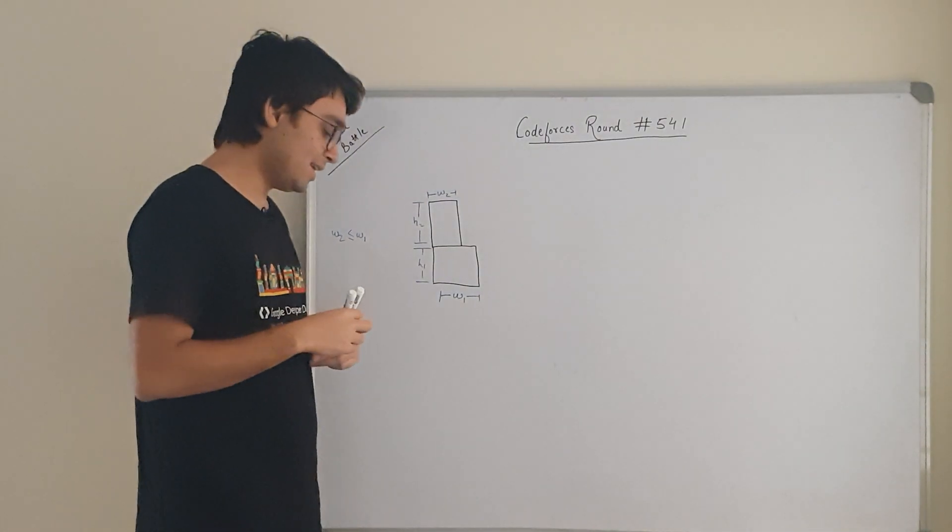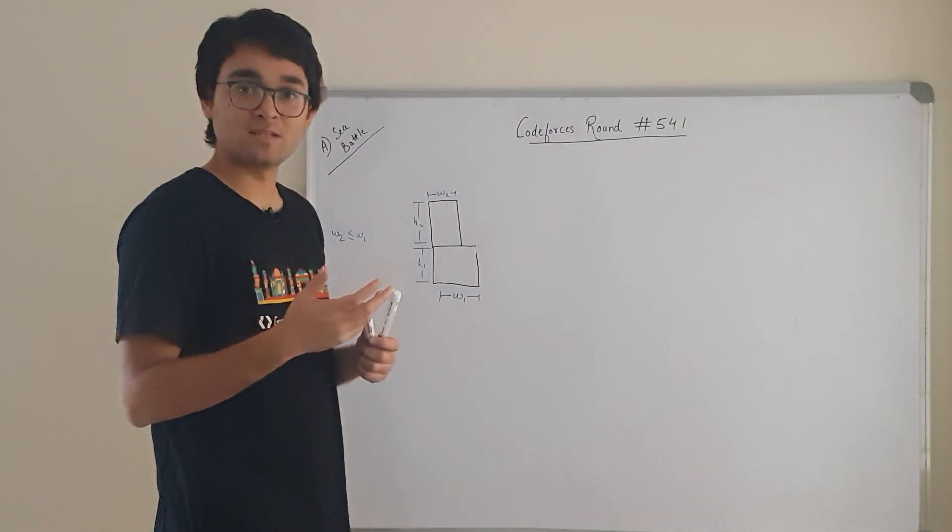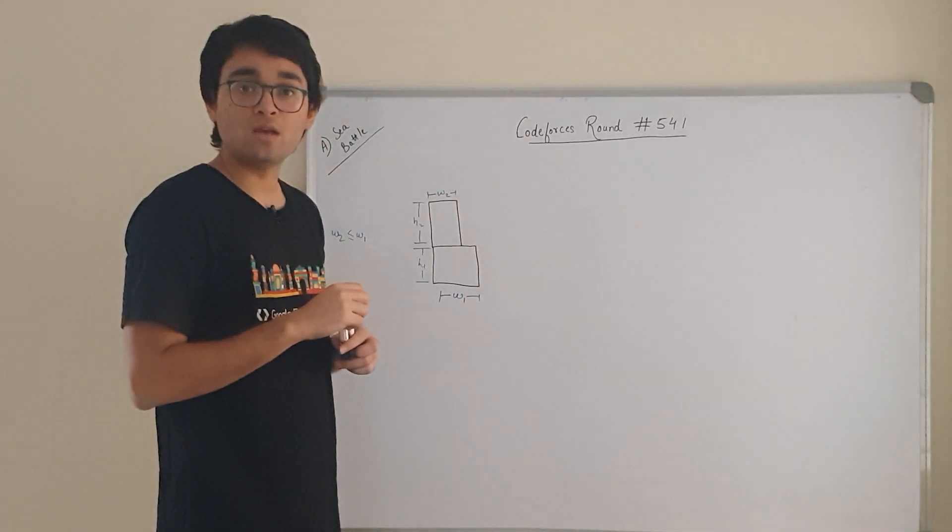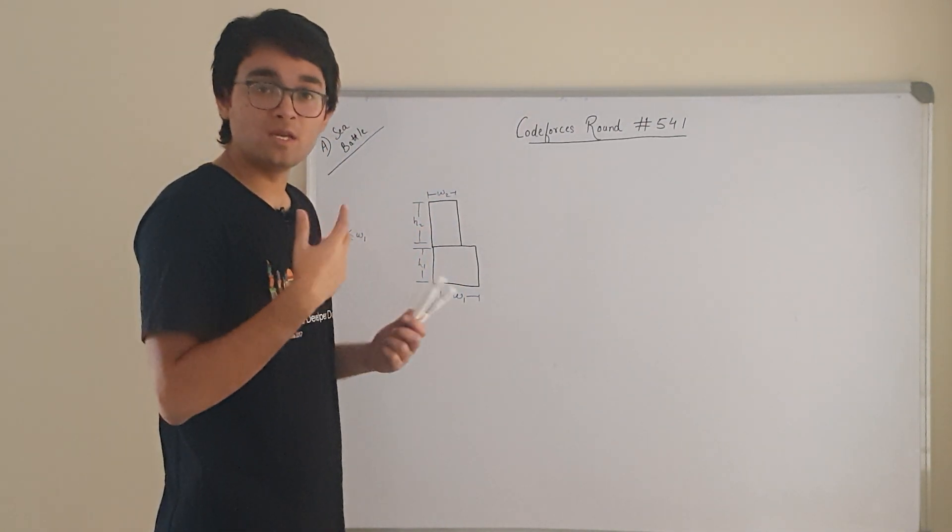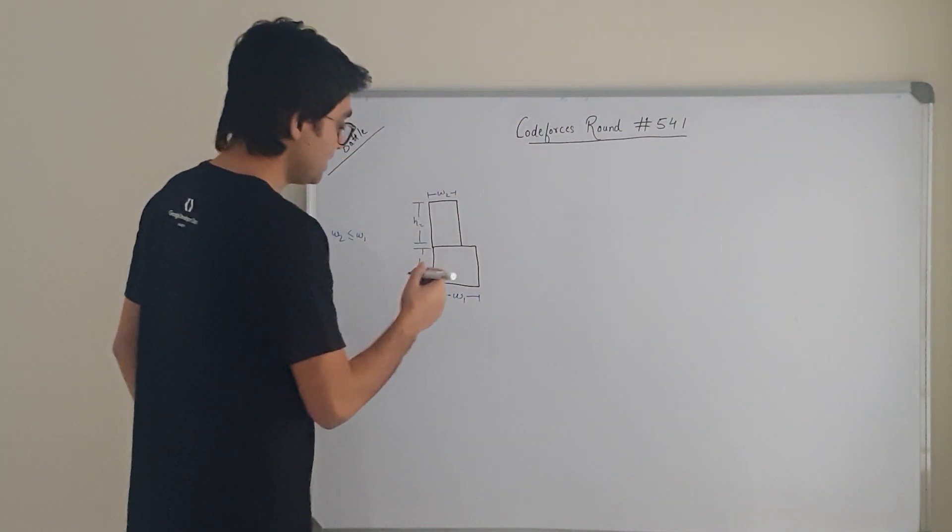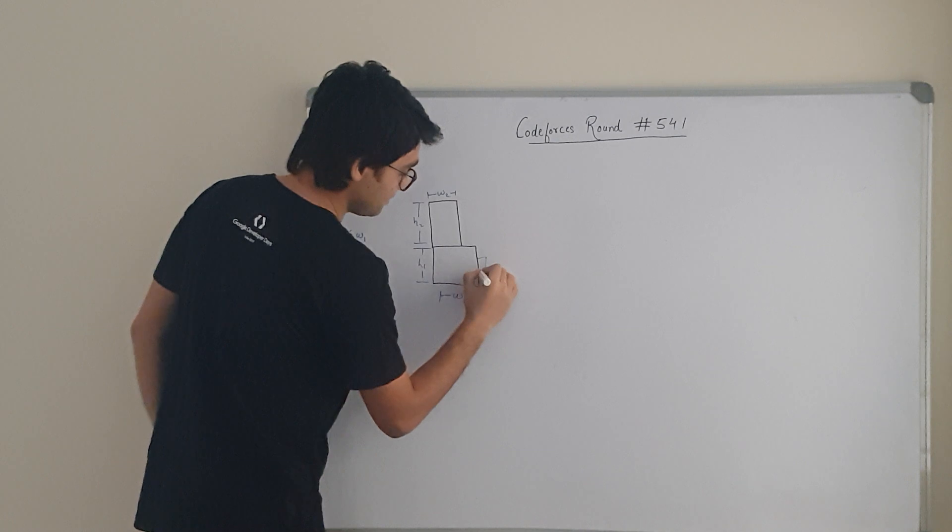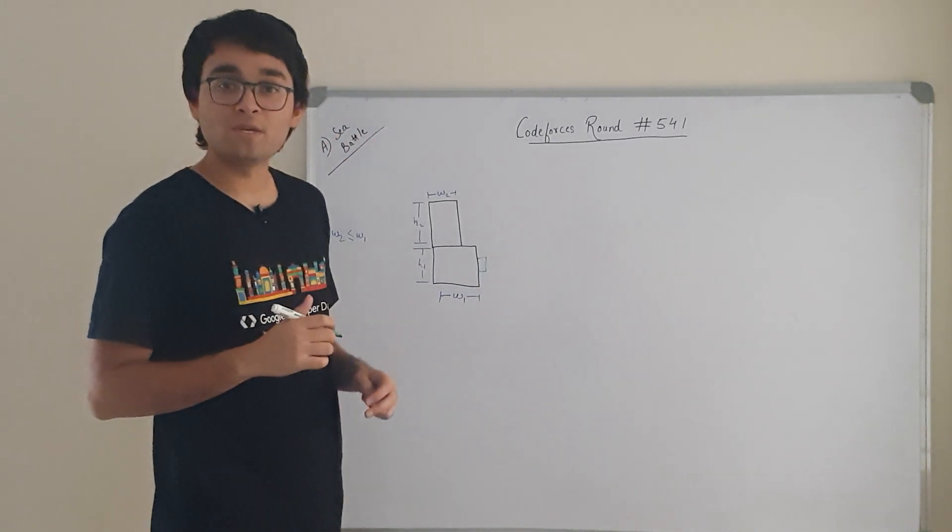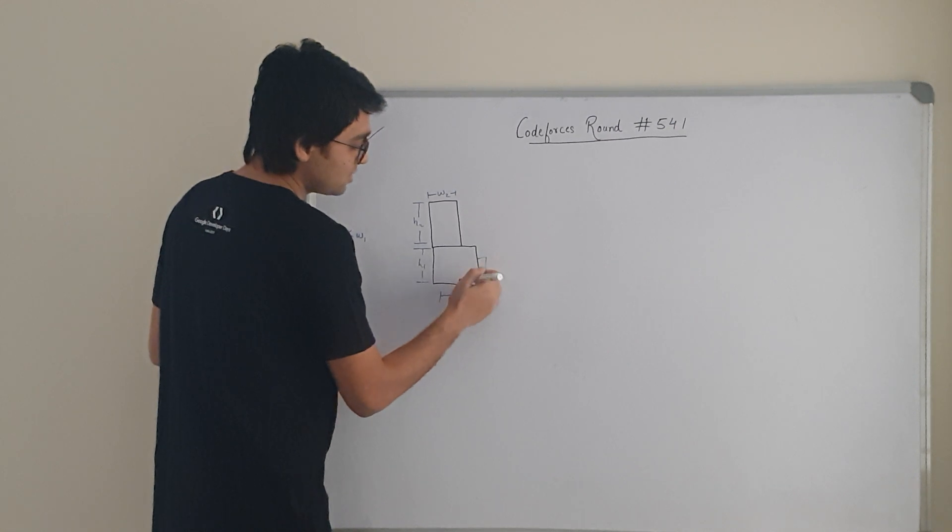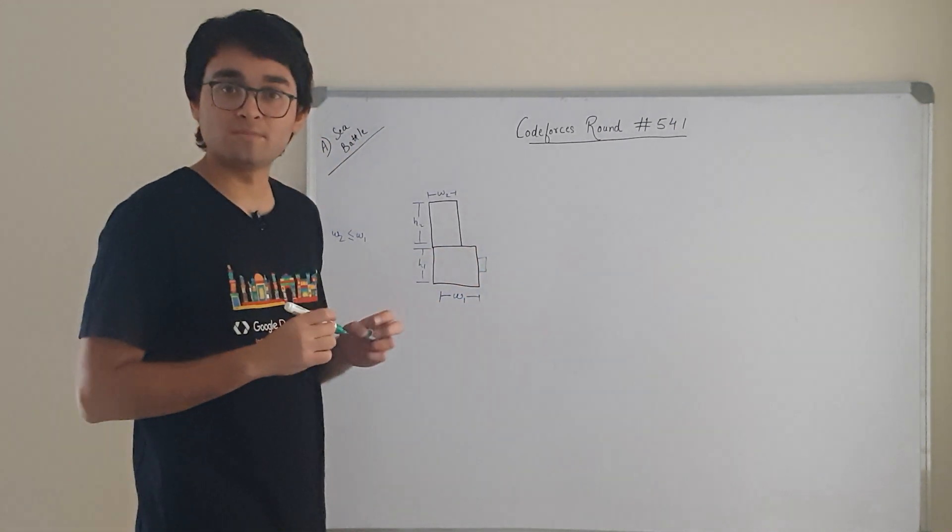Now, what they need you to find is the number of cells that will be neighbors to this structure. What are the cells that are going to be neighbors? Any cell, say like this cell, is going to be a neighbor to this structure. Why? Because this cell and this structure are sharing the same edge.